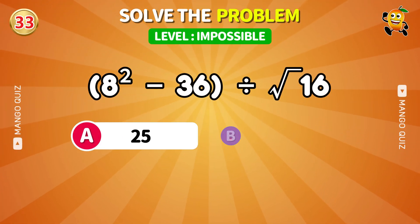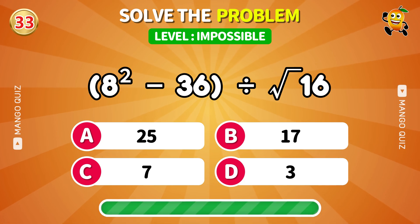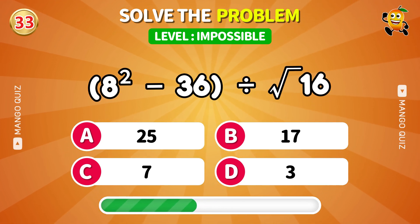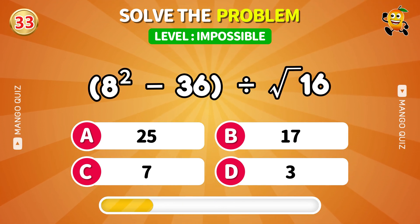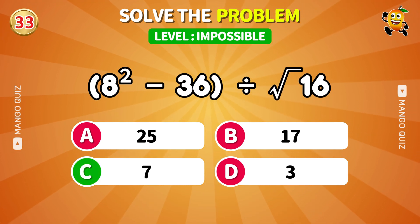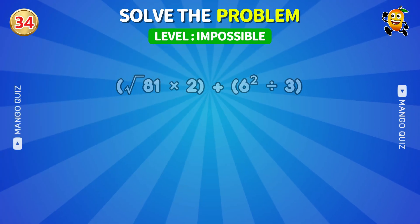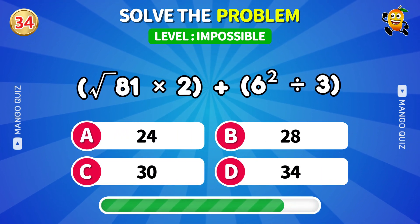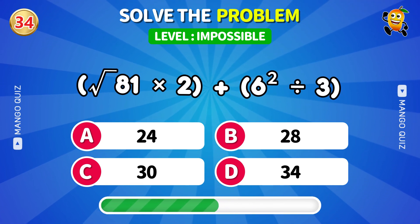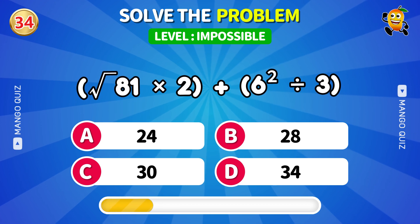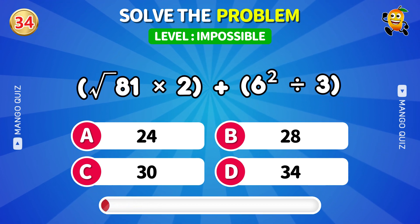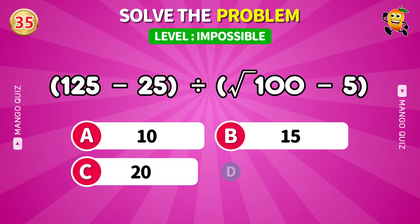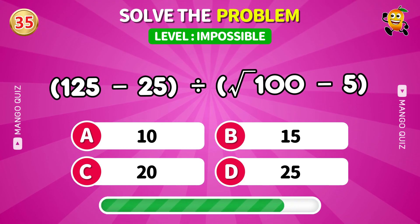8 squared minus 36 divided by root 16. Answer: 7. Root 81 times 2 plus 6 squared over 3. Answer: 30. Next: 125 minus 25 then divide by root 100 minus 5. Answer: 20.